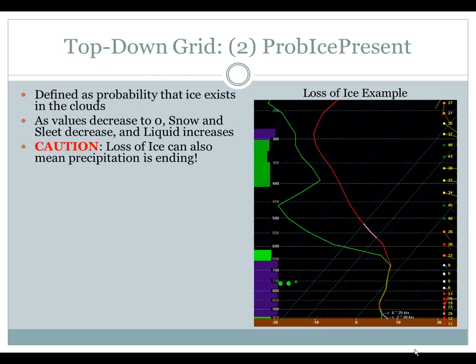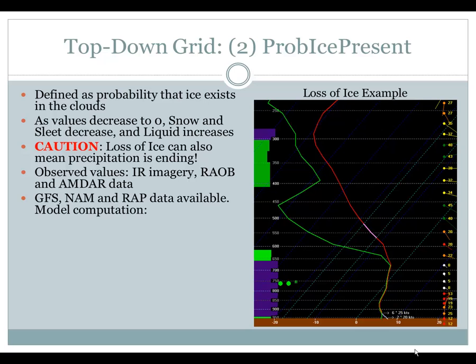Only use the prob ice present grid in those situations where you still have lift occurring within your moist layer — that is probably a shallow one. Observed values for this grid can come from IR imagery, RAOB data, as well as AMDAR. GFS, NAM, and RAP data are also available. The first check in the computation is to look for a deep dry layer, kind of like that seeder-feeder process, which should be familiar from the top-down science training.